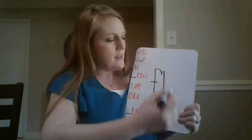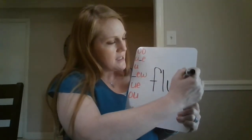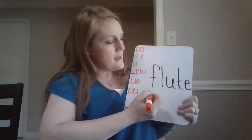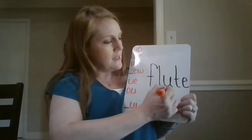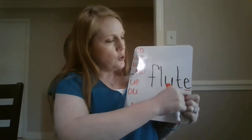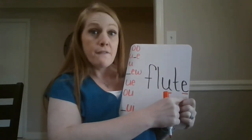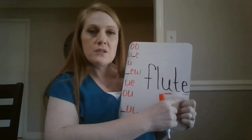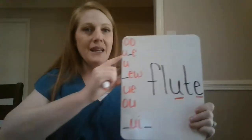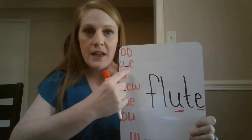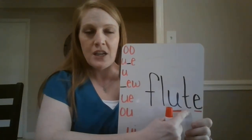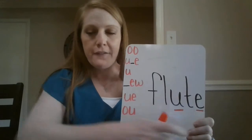Here's that F-L consonant blend again. So here I see FL-U-T. This word is flute. A flute is an instrument. You can see I have the U blank E spelling right here in the middle in the word flute. The consonant that goes here is T. So I have flute.